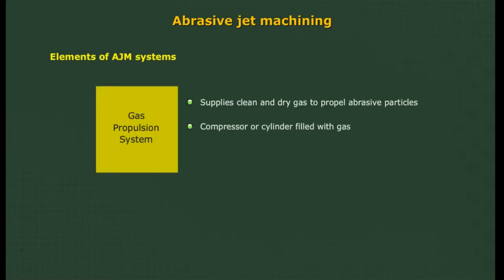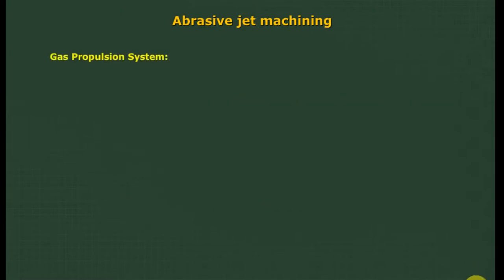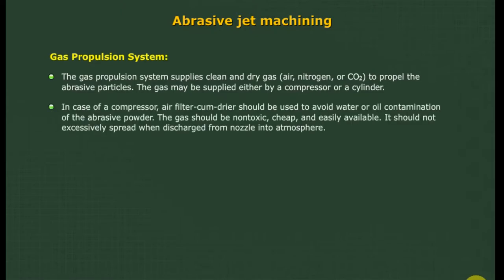In the elements of an AJM system, first is the gas propulsion system. The gas propulsion system supplies clean and dry gas to propel the abrasive particles. The gas may be supplied either by a compressor or a cylinder. In case of a compressor, an air filter and dryer should be used to avoid water or oil contamination of the abrasive powder. The gas should be non-toxic, cheap, and easily available, and should not excessively spread when discharged from the nozzle into the atmosphere.